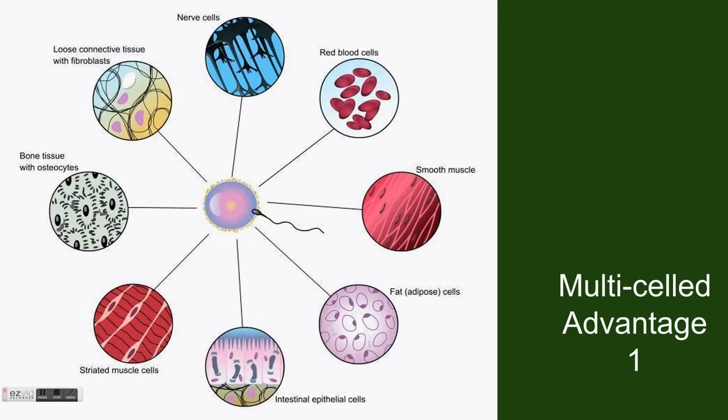For example, bone cells sacrifice many organelles essential for survival to make extra room for a dense cytoskeleton to support the body. Cells support each other and work together to fulfill the characteristics of life for the single organism they make up.